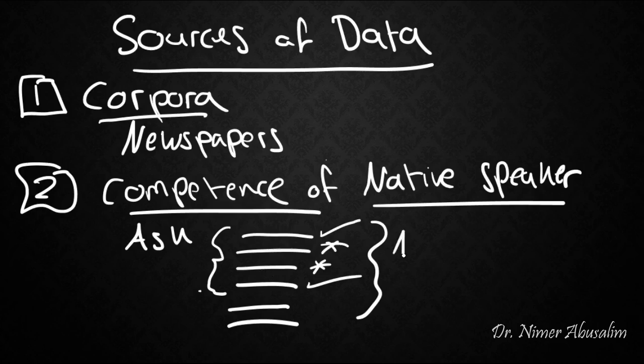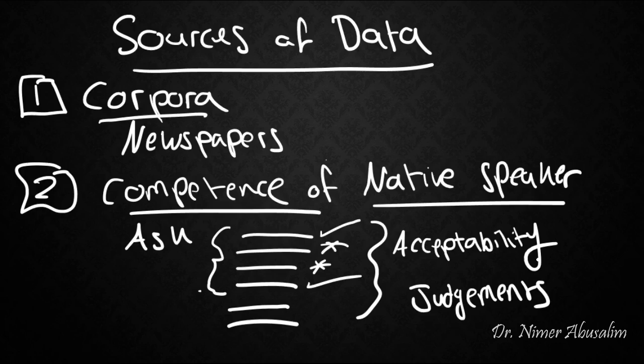In particular, we call these acceptability judgments. This is where the native speaker judges whether a certain sentence is acceptable as grammatical language or not. And you might imagine here that we have to ask more than one native speaker. We cannot rely just on data from one source. So the most reliable source, as we said, were the acceptability judgments of native speakers.